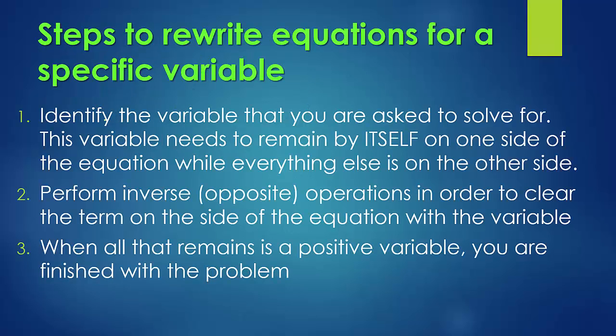So here are some steps to rewrite it. First, make sure you know the variable that you're asked to solve for. That's the one you want to get completely by itself. Everything else has to be on the other side of the equal sign. Make sure you're performing the opposite or inverse operations to clear the terms from one side of the equation to the other. And when all that remains is a positive variable, you are done.